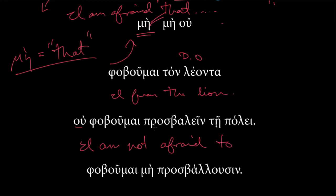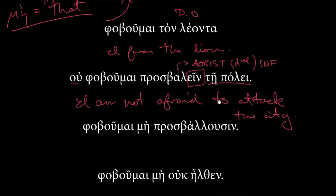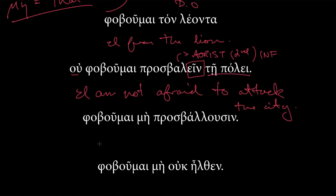So, φοβοῦμαι τὸν λέοντα, these are examples taken from Shelmerdine. This is exactly the sort of direct object we'd seen. So, I fear the lion, or I am afraid of the lion. Here, I am not afraid. No, that's just a οὐ in front of a regular verb. Nothing, no fear clause here. I am not afraid.